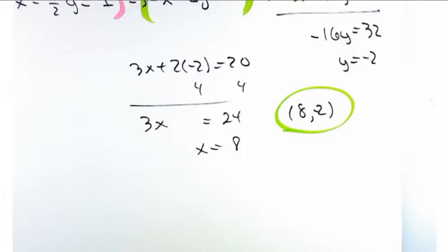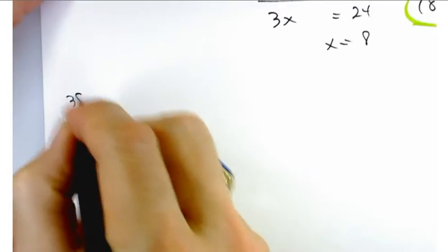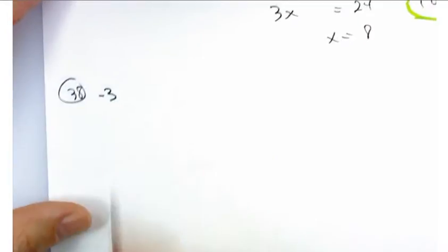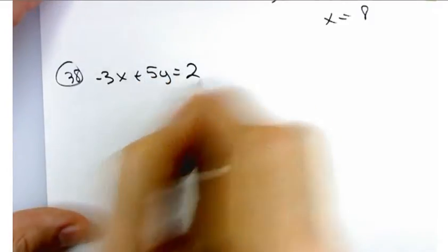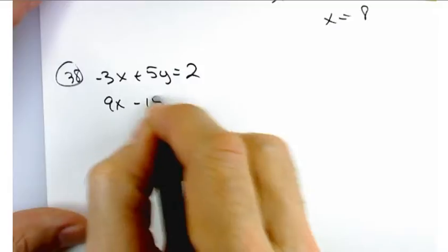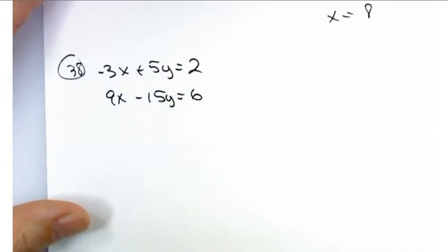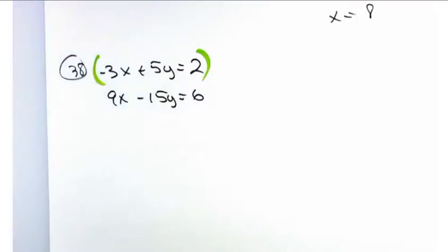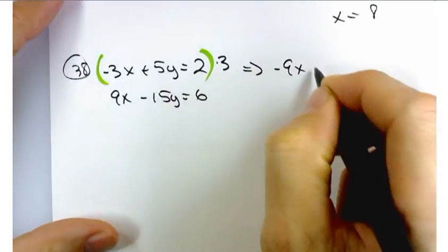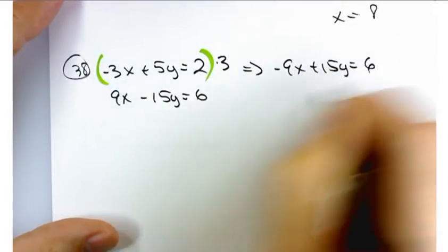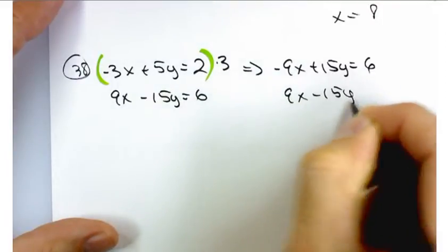Let's try another one. Problem number 38. A little bit friendlier in one sense. We don't have any fractions to deal with. So, we've got negative 3x plus 5y equals 2 and 9x minus 15y equals 6. So, if you're going to solve this one by addition, how much you proceed? Yeah, let's multiply the top equation by 3. So, that's going to give me minus 9x plus 15y equals 6. Add it to 9x minus 15y equals 6.